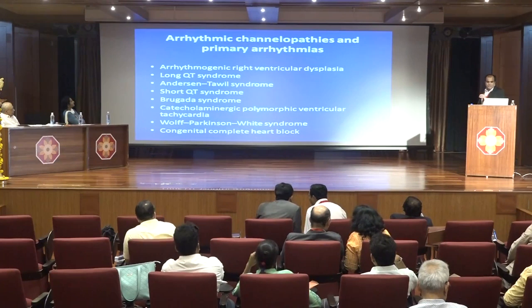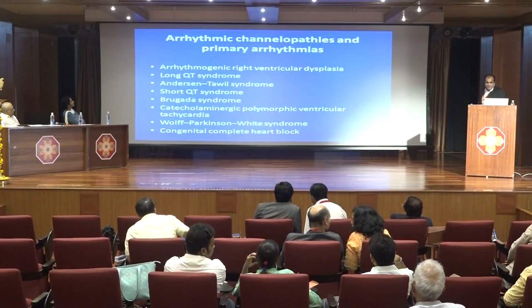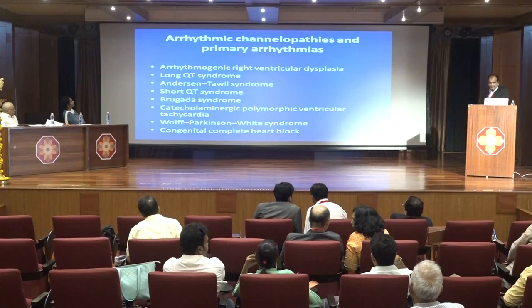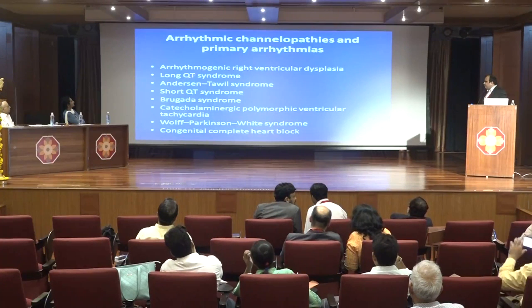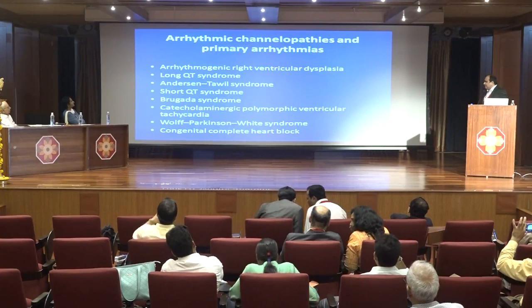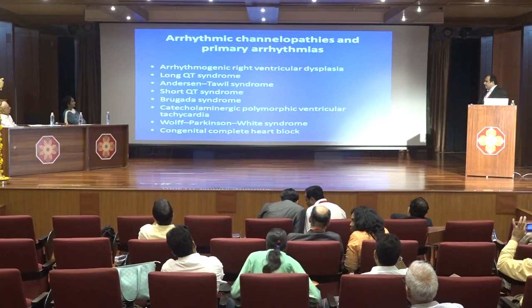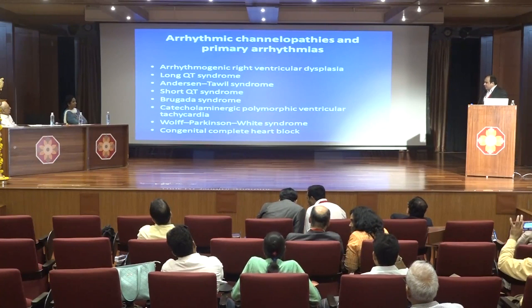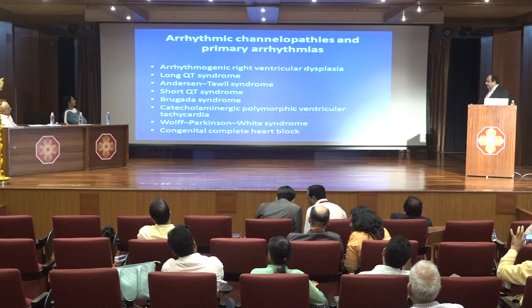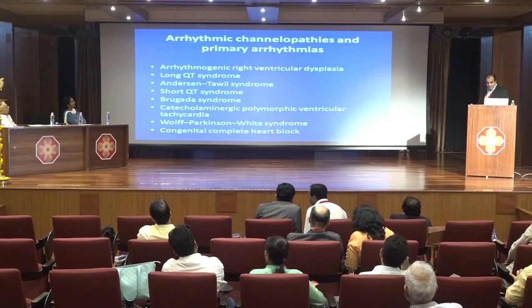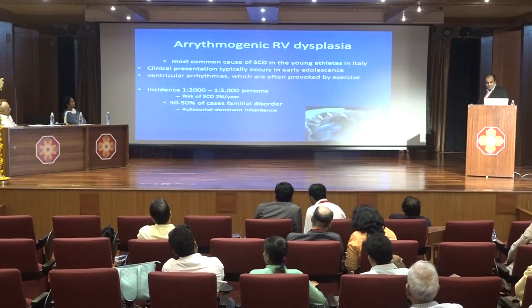The other causes of sudden cardiac death are primary arrhythmias and channelopathies, the most important of which are long QT syndrome, Brugada syndrome, and arrhythmogenic RV dysplasia. Others include short QT syndrome, catecholaminergic polymorphic VT, WPW syndrome, and complete congenital heart block.